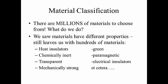We said there are millions of materials to choose from. These materials have different functionalities, so we were able to narrow that down from millions to let's say hundreds. So instead of just saying I have calcium carbonate, I have salt, I have sugar — now I have classes for them. Some of them are heat insulators, some are chemically inert, some are transparent, some are mechanically strong, some are paramagnetic or diamagnetic, etc.